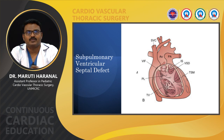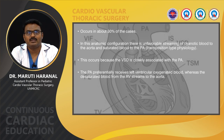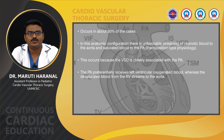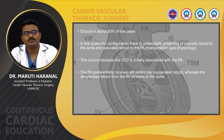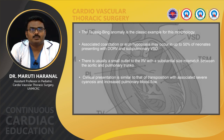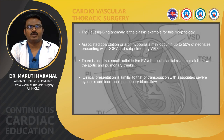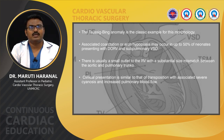Subpulmonary VSD occurs in around 30% of cases. In this configuration there is unfavorable streaming of cyanotic blood to the aorta and oxygenated blood to the pulmonary artery, behaving more like transposition physiology. The pulmonary artery preferentially receives left ventricular oxygenated blood, while desaturated blood from the right ventricle streams to the aorta. The Taussig-Bing anomaly is the classical example. Associated coarctation or arch hypoplasia may occur in up to 50% of neonates with DORV and Taussig-Bing variant, with clinical presentation similar to transposition with severe cyanosis and increased pulmonary blood flow.